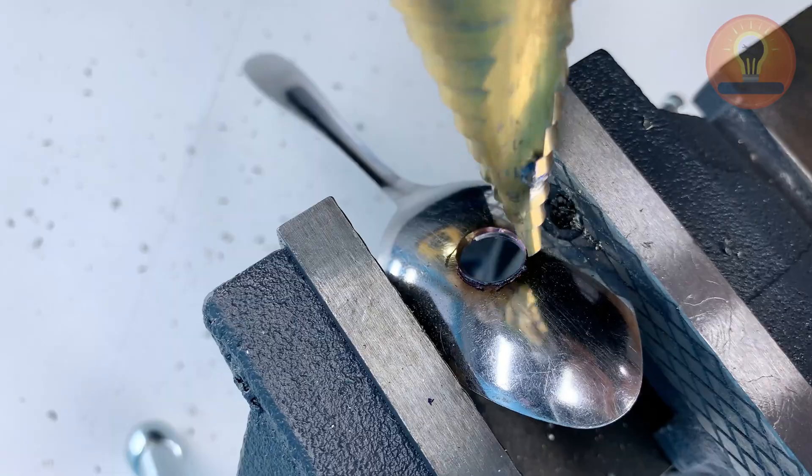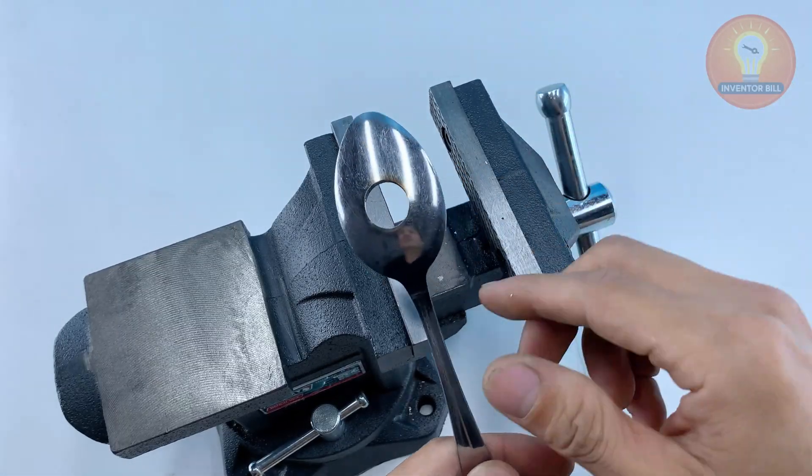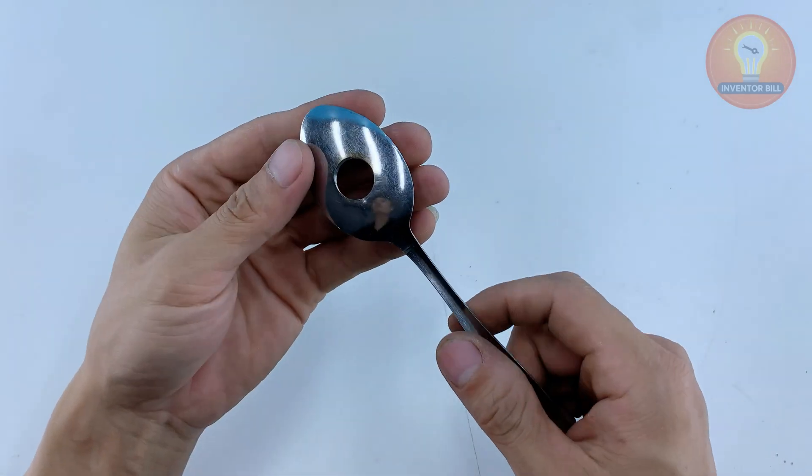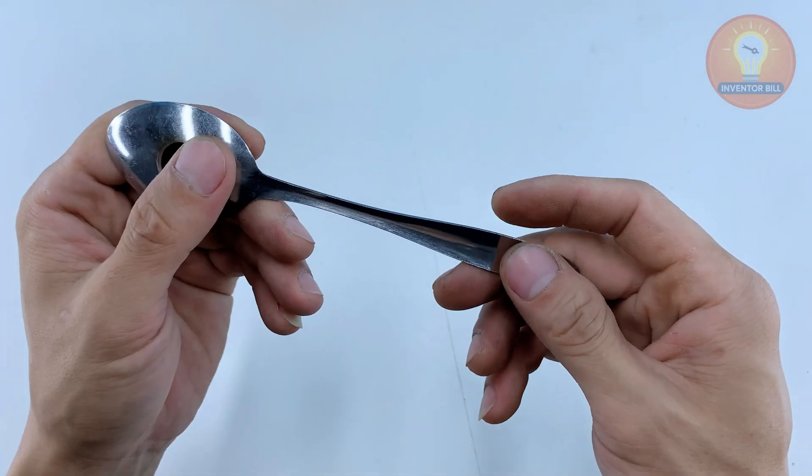Once the hole opens clean through, check the edges with your finger to be sure they're smooth. This hole will hold the heart of your tool later, so getting it drilled clean and centered makes the whole project come together.